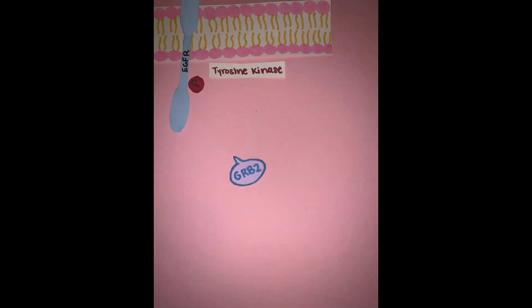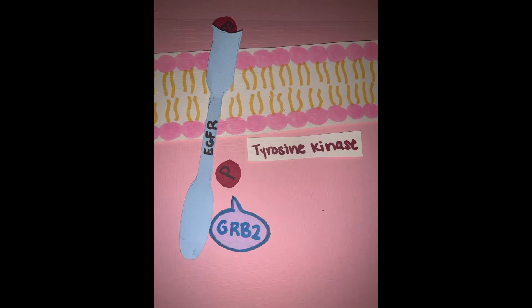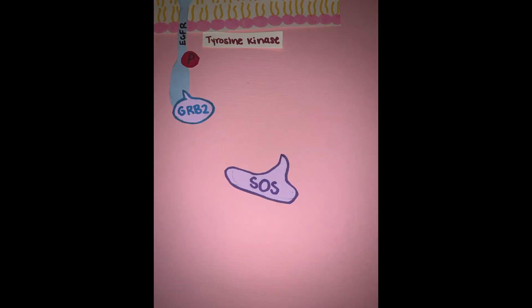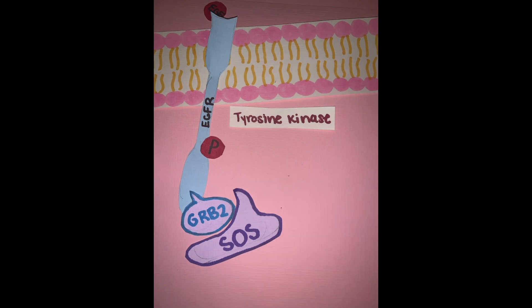Once GRB2 interacts with the epidermal growth factor receptor, it will activate a protein known as SOS. These are the very first cell signaling molecule proteins activated at the beginning of this pathway.